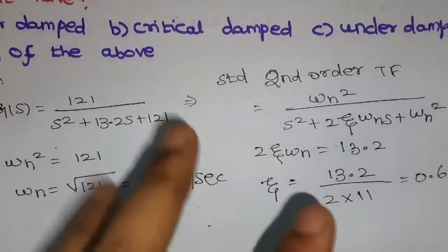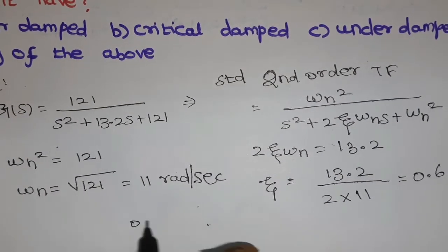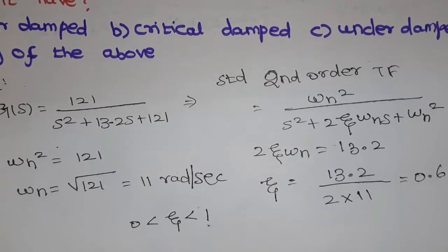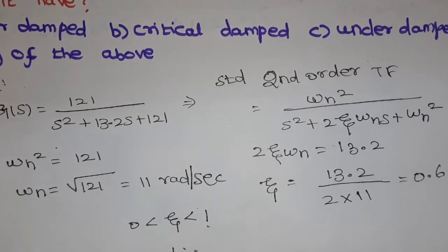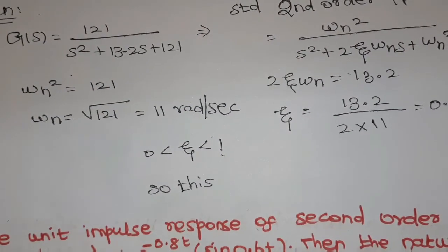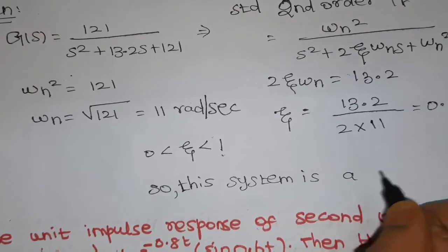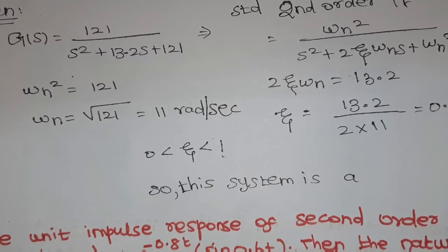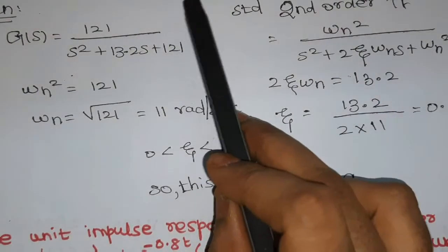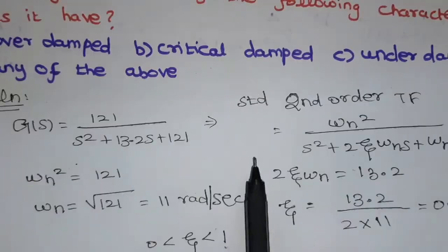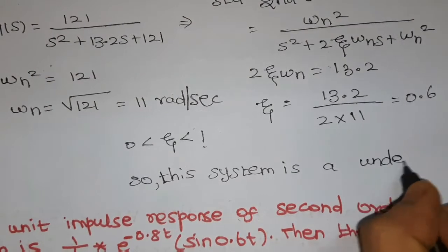From this zeta damping ratio value, we find out whether the given system is over-damped, critically damped, or under-damped. This zeta value of 0.6 is between 0 and 1, so the system is an under-damped system. If zeta is greater than 1, it is over-damped. When zeta is equal to 1, the system is critically damped. The given system is an under-damped system.